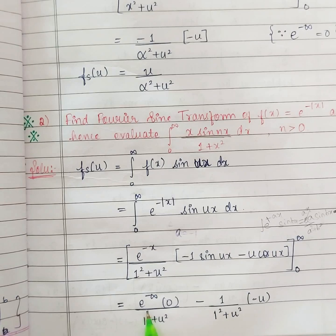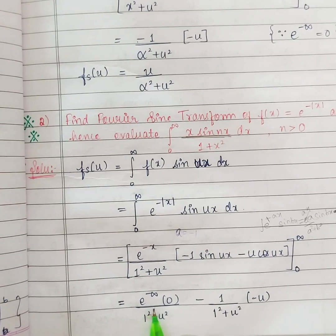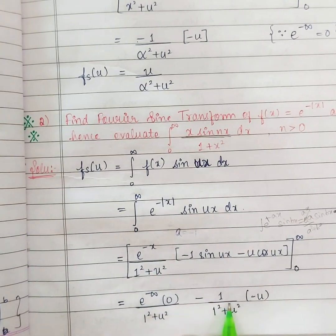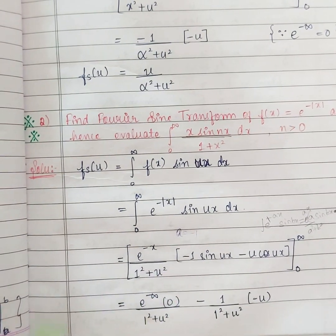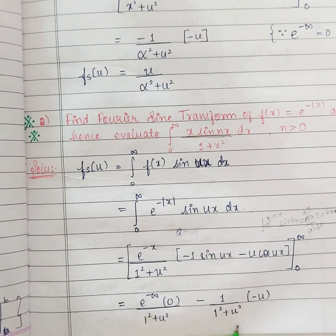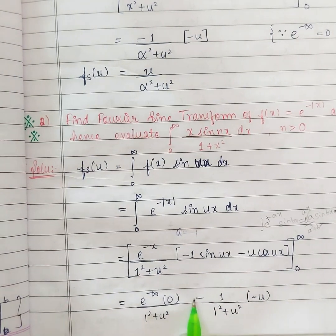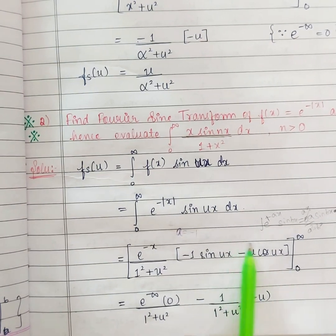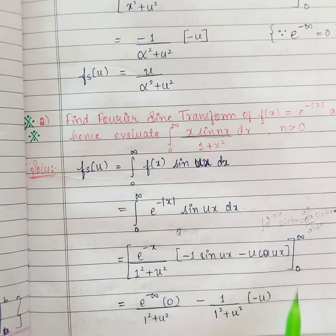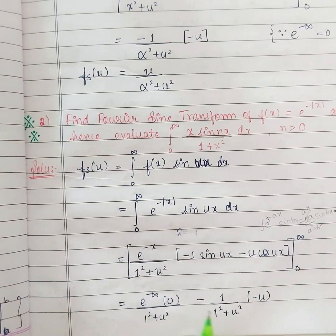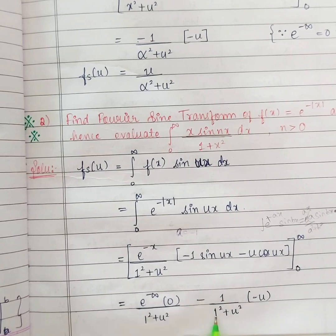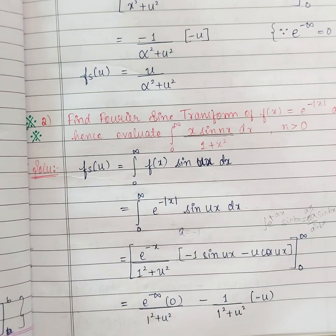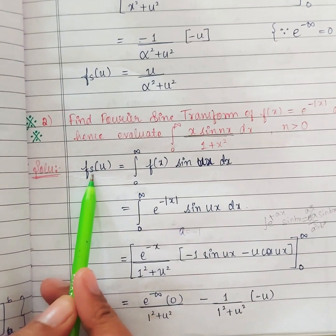The limit is from 0 to infinity. When you apply the upper limit you will get e power minus infinity, and when you apply the lower limit you will get e power 0, which gives 1. The first term becomes completely 0 and you are left with only the second term. This minus and this minus become plus. Because cos 0 is 1, minus u is there as it is. Upper limit minus lower limit gives one more minus. So your answer will be u by 1 square plus u square, that is u by 1 plus u square. You got the Fourier sine transform.